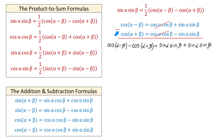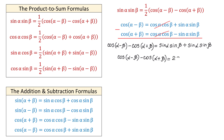Sine of alpha sine of beta minus negative sine of alpha sine of beta is sine of alpha sine of beta plus sine of alpha sine of beta. Now, on the right side, we have two like terms, and if we add them, we will get two sine of alpha sine of beta. And now we will have cosine of alpha minus beta minus cosine of alpha plus beta equals two sine of alpha sine of beta.